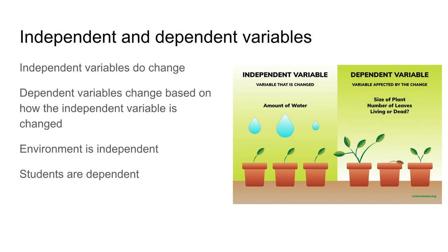A major part of this research paper is the independent and dependent variables. Independent variables change on their own, while dependent variables change based on how the independent variable is changed. For example, if you look at the picture to the right, the independent variable is the amount of water. Based on how much water we give the plant, we can deduce that the size of the plant changes, the number of leaves changes, and whether the plant is alive or dead.